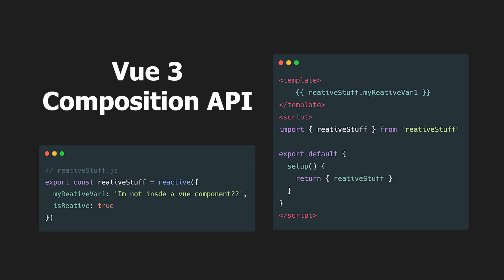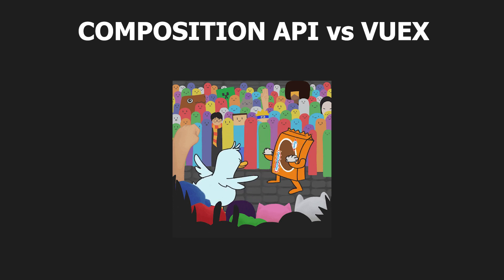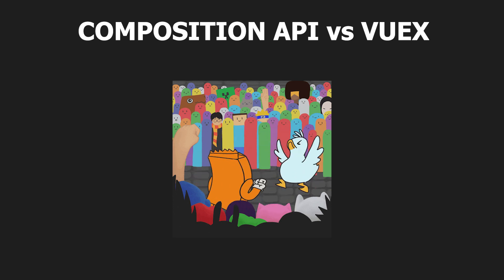Knowing this, you could create a module file exporting reactive variables and import this into any component where you want to use it. This has an obvious application of replacing Vuex as a global reactive state. So that brings up the question: do we still need Vuex? Before we can answer that question, let's see how we can roll our own Vuex using the Composition API.